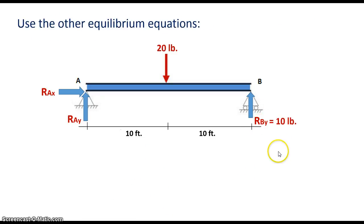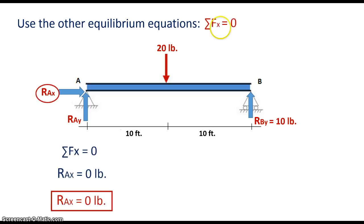So now we have RBY. Next, we want to use, I already had stated earlier, we had three equilibrium equations, so we want to use the other two equilibrium equations. And the other two equilibrium equations are the sum of the forces of X is equal to zero, and the sum of the forces of Y is equal to zero. So we'll do the sum of the forces of X equals zero first. As you notice, the only force we have in the X is RAX. So I set my equation, sum of the forces of X equals zero, RAX equals zero pounds. That makes sense, because there is no horizontal force acting upon this beam, so we say RAX is zero pounds.